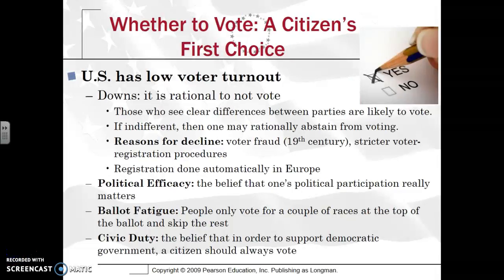The United States has one of the lowest voting turnouts, especially when you look at congressional elections. One person, Downs, basically stated that it is rational not to vote — if you don't really see clear differences between parties, you're not going to vote. This indifference makes it seem that rationally you would abstain from voting. Some people say Democrats and Republicans are really the same, and as a result, they're not going to vote.